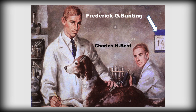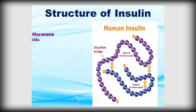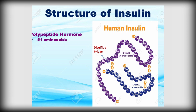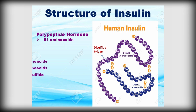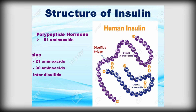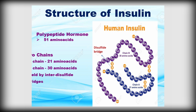They extracted insulin from a dog's pancreas. Insulin is a polypeptide hormone with 51 amino acids. It has two chains: an A chain with 21 amino acids and a B chain with 30 amino acids, held together by interdisulfide bridges.